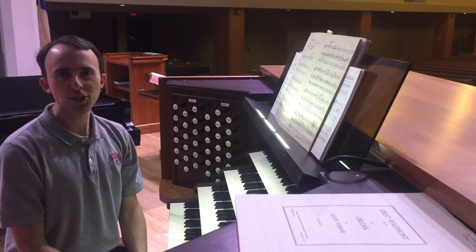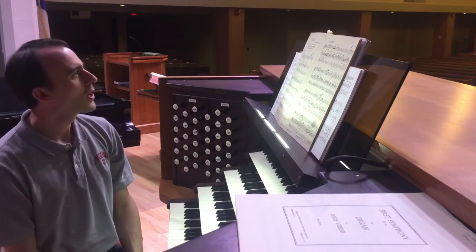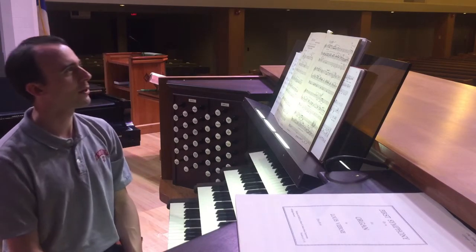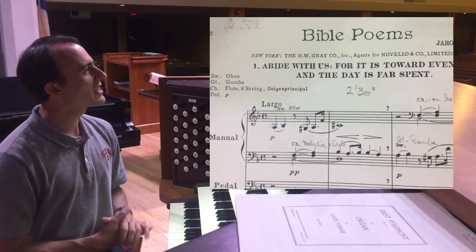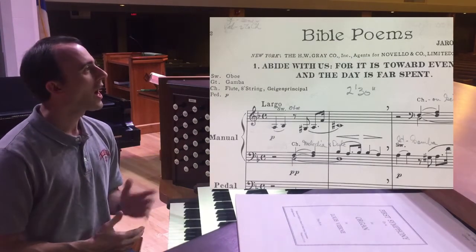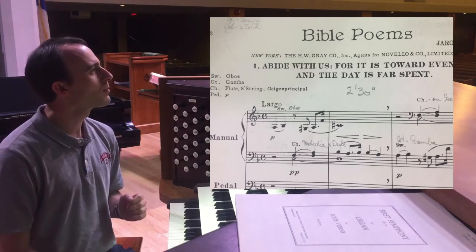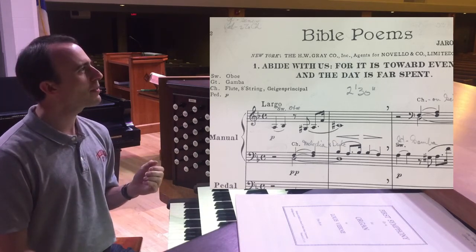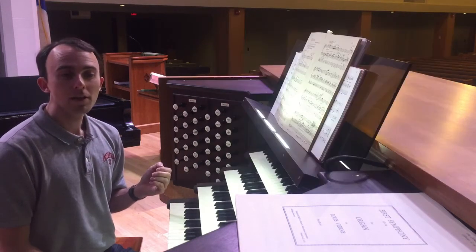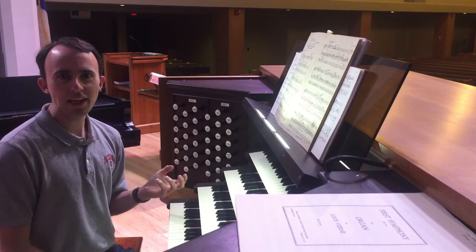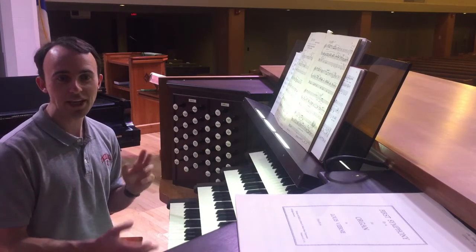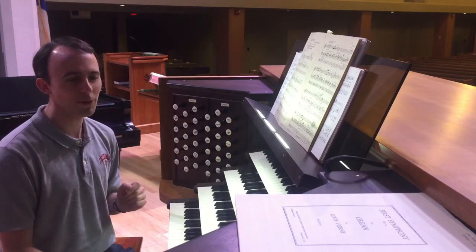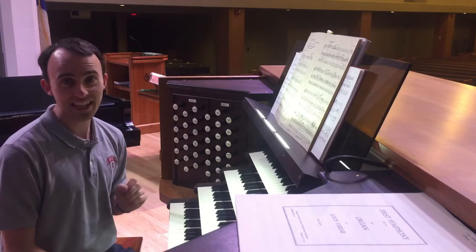Now let's take a look at specific stop indications. This piece is a Bible poem by the Czech composer Jaromir Weinberger. For this piece we have indicated an oboe on the swell, a gamba on the great which is a string type sound, on the choir we have a flute, an eight-foot string, and a Geigen principal, and then the pedal is listed as piano. Very often the categories for stop indications can be combined, which is what you have here — three very specific indications for the manuals and a very vague indication for the pedal, which means we just need to find something for the pedal that will balance it out.